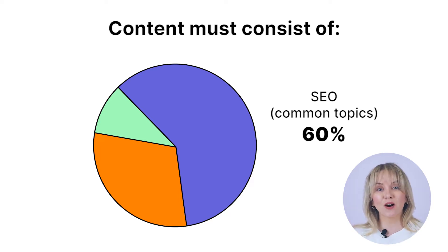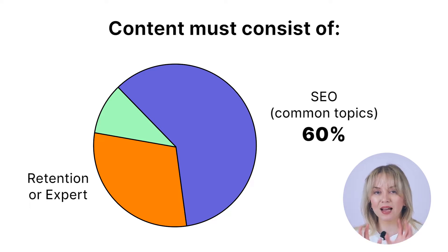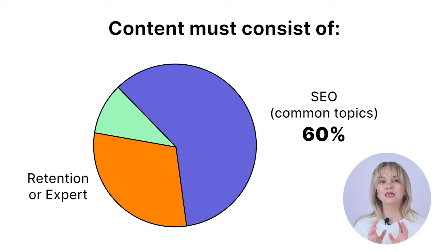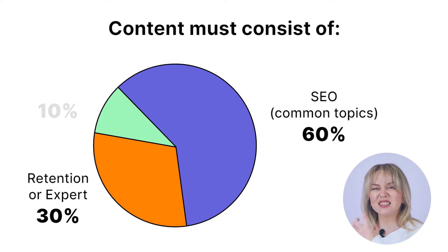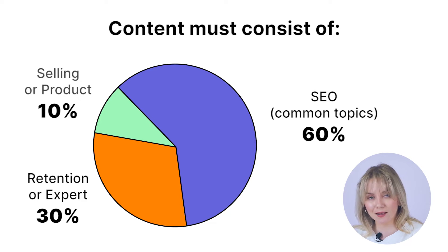The next part is retention content, which is all about expert content your company is sharing with the world. This type of content usually makes up 30% of all your content. And finally, there is 10% given to the content that sells your product.